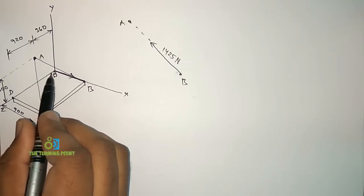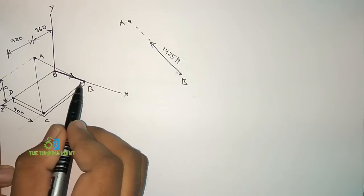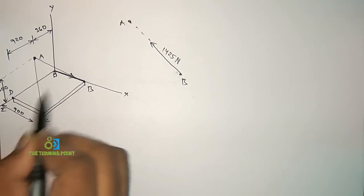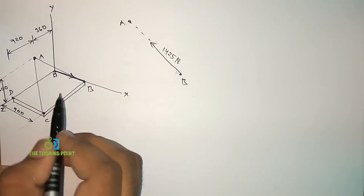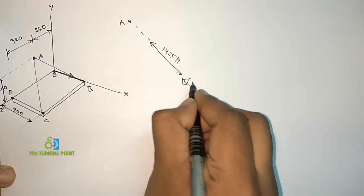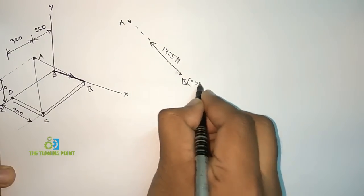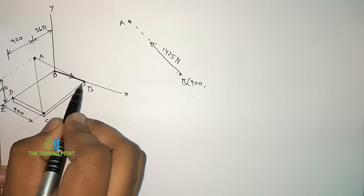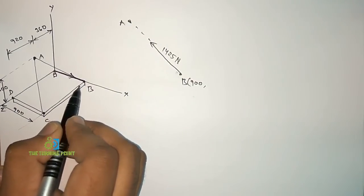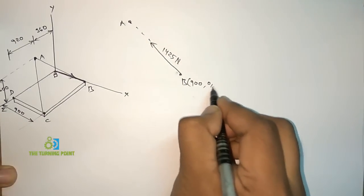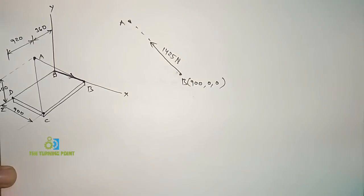From the origin to point B, I traveled a distance of 900 along the X direction, so the X coordinate is 900. I did not travel along the Y or Z directions to reach B, so those two coordinates are 0. Therefore, B = (900, 0, 0).